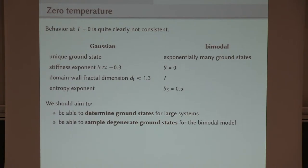So the first task here is to determine ground states for large systems to get good control of the finite size corrections. And also we would like to, for the case of the bimodal model, sample the degenerate ground states with the right weight, which is to sample each ground state with the same weight, a uniform distribution, which is not what comes out of these algorithms.